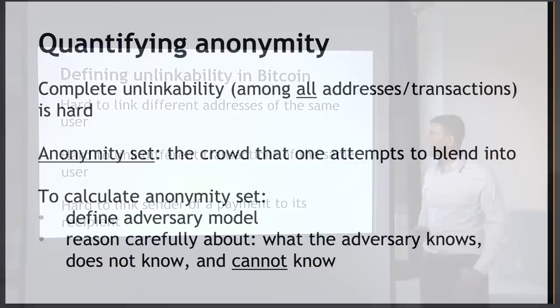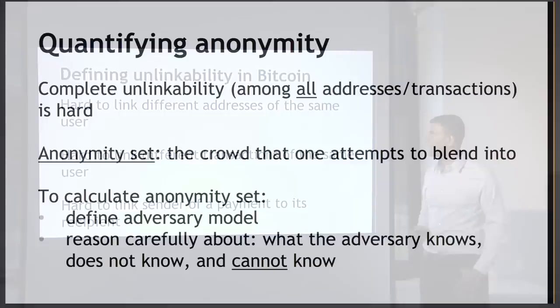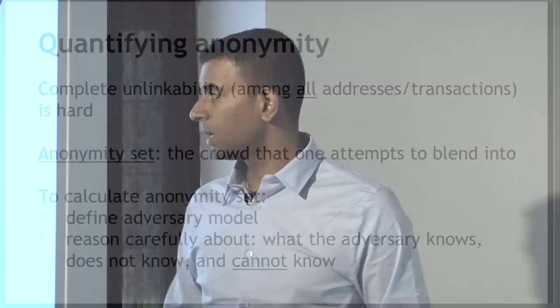This is how we quantify anonymity. We usually don't try to achieve complete unlinkability among all transactions or addresses. Instead, we try to maximize the size of our anonymity set — the size of the crowd of other addresses or transactions we're trying to hide in. If an adversary can't tell my transaction apart from a thousand others that look just like mine, that's a pretty good level of anonymity. To calculate this anonymity set, you must first define concretely what your adversary model is, reason carefully about what they know and don't know, and analyze each protocol on a case-by-case basis.